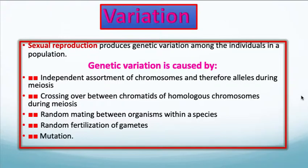Sexual reproduction produces genetic variation among individuals in a population. This genetic variation is caused by independent assortment of chromosomes and therefore alleles during meiosis, crossing over between chromatids of homologous chromosomes during meiosis, the random mating between organisms within a species, as well as the random fertilization of gametes and mutations. Let's talk about some of those.